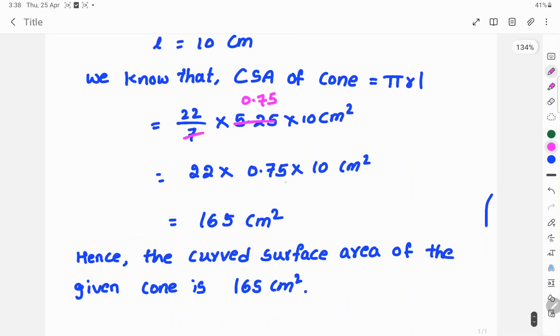These three values multiplied give 165 cm². Hence, the curved surface area of the given cone is 165 cm².